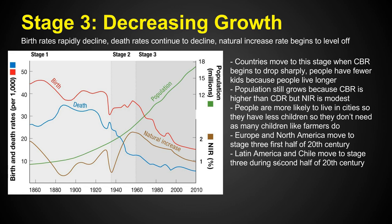Stage 3 is where we see decreasing growth. Birth rates decline, death rates continue to fall, and the natural increase rate begins to level off. People start having fewer babies because women are entering the workforce, birth control becomes available, and women are going to school and getting jobs rather than staying home. Population still tends to grow, but not as quickly. People are more likely to live in cities and don't need large families. Europe and North America moved to Stage 3 in the early 20th century; Latin America and Chile moved there during the second half of the 20th century.